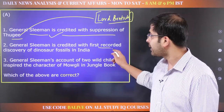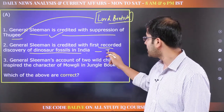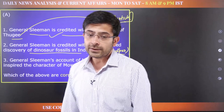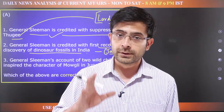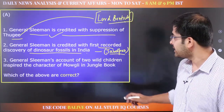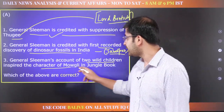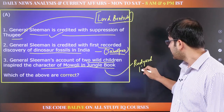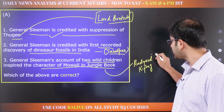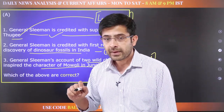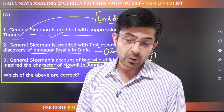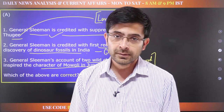General Sleeman is credited with the first recorded discovery of dinosaur fossils in India near Jabalpur. He writes about this in his account, and that fossil was sent to London where it was studied and officially recorded as the first instance of dinosaur fossils in India. His account of two wild children also inspired the character of Mowgli, written by Rudyard Kipling.